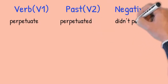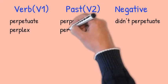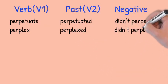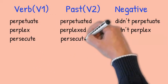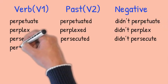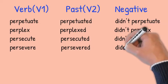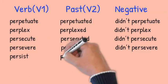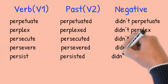Perpetuate, perpetuated, didn't perpetuate. Perplex, perplexed, didn't perplex. Persecute, persecuted, didn't persecute. Persevere, persevered, didn't persevere. Persist, persisted, didn't persist.